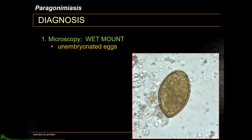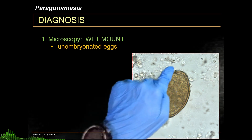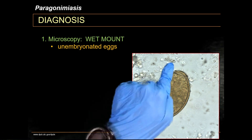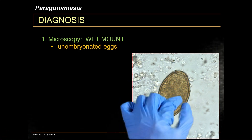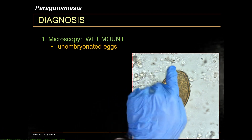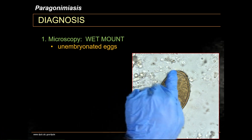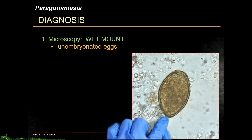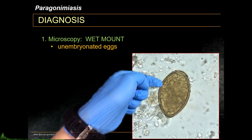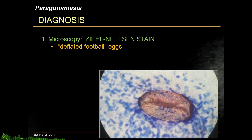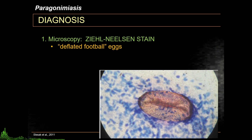The definitive diagnosis for Paragonimiasis is the visualization of unembryonated eggs using microscopic techniques. You can do a wet mount where you'll see a yellow-brown ovoid shell. The shell is relatively thick, with a flattened operculum on one end, while the ab-opercular end is usually a little thickened. Special staining techniques include Ziehl-Neelsen stain, which reveals deflated football-shaped eggs, usually brownish to reddish in color.